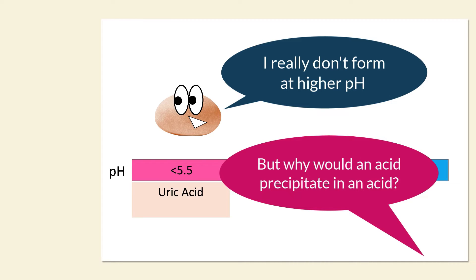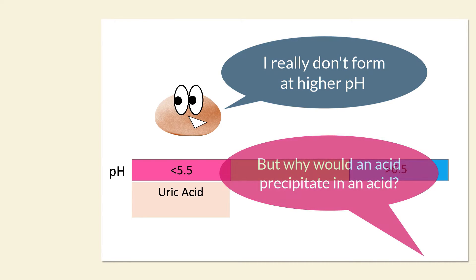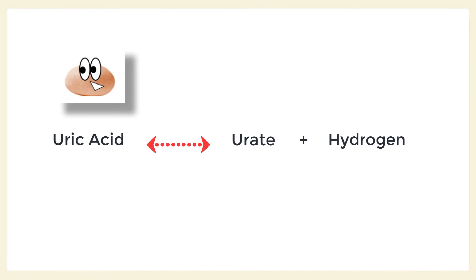But wait a minute. Uric acid is an acid. So why on earth would it precipitate in an acid? Now this is a cool concept. Uric acid exists in this little equilibrium equation that you might remember from high school chemistry. The definition of an acid is a solution in which there are free hydrogen ions. And with uric acid, those hydrogen ions are free in solution together with urate, which is very soluble. On the other side of this equation is the uric acid molecule itself, which is not free in solution and is pretty insoluble.